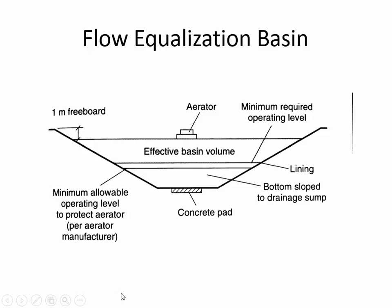Another important feature of a flow equalization basin is that there needs to be an aerator inside, because this is raw untreated wastewater with a lot of BOD in it. You're storing this waste before it enters the main treatment system, but it's still consuming oxygen. If you don't supply oxygen and it goes anaerobic, it can get really nasty — one of the gases from anaerobic waste is hydrogen sulfide, which is toxic, poisonous, and corrosive. So that's definitely to be avoided.